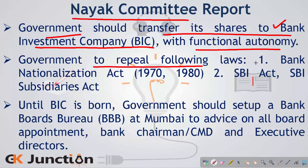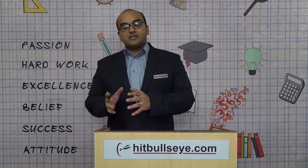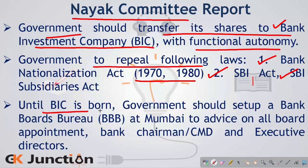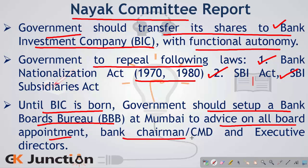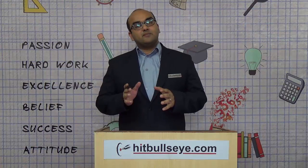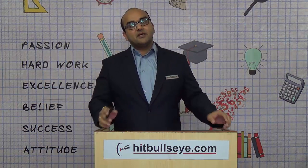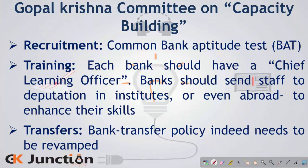The committee also recommended that the government repeal the Bank Nationalization Act of 1970, the SBI Act, the SBI Subsidiaries Act, etc. However, the P.J. Nayak Committee realized that transferring all government stake to the Bank Investment Company (BIC) would take a lot of time. In the temporary phase, the Nayak Committee recommends that until BIC is born, the government should set up a Bank Boards Bureau at Mumbai to advise on all board appointments — bank chairman, CMD, executive directors, etc. Essentially, the committee is saying that an independent body like the Bank Boards Bureau should recommend names of higher-level management for various public sector banks so that political interference in banking operations is minimized.